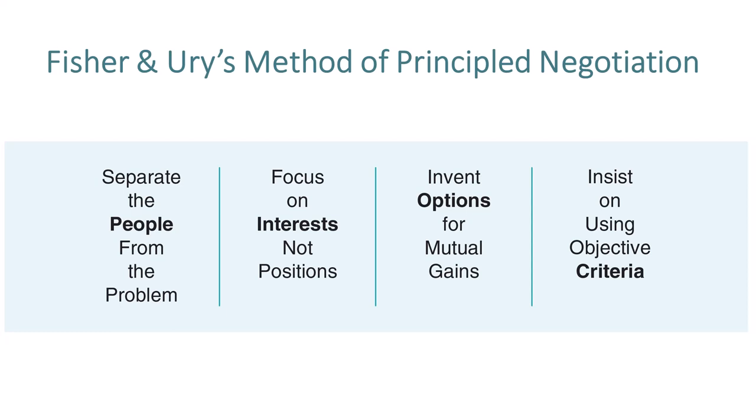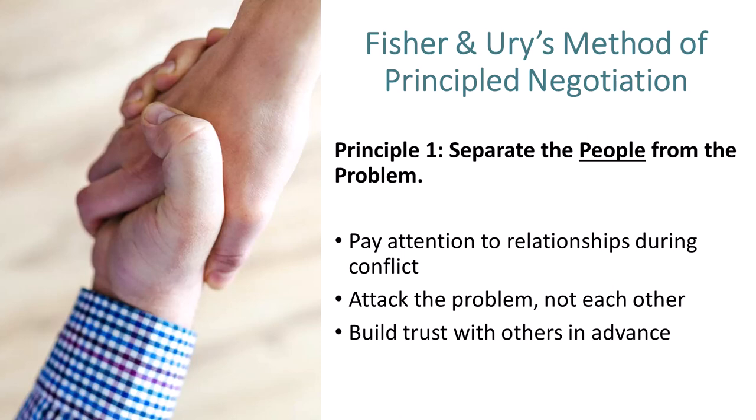First, we want to separate the people from the problem. By doing this, we become more attentive to our relationships during a conflict and avoid defining the situation as a test of wills. By focusing on the problem, it is not us versus them, but more of working together to figure out a solution. One way to help do this, ahead of a conflict, is to build trust with others. This can help diffuse strong emotions and keep a conflict from escalating.